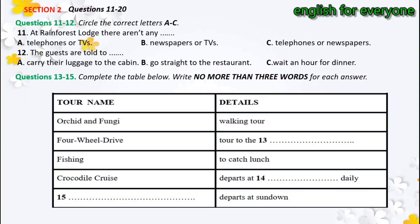Tomorrow, I think we've still got places on the Orchid and Fungi Tour. This is on foot and takes you to different parts of the rainforest. Or, if you'd prefer, there's the Four-Wheel Drive Tour to the waterfalls, or the fishing trip where I promise you we'll catch some lunch, and, last but not least, the famous crocodile cruise that leaves at 11 a.m. each day, just in time for the crocodile's lunch. In the evenings, there is the Spotlight Tour — one of my favorites. It leaves at sundown and lets you catch a glimpse of rainforest wildlife as it comes out at dusk to feed. I'd really try to make sure you do it during your stay.